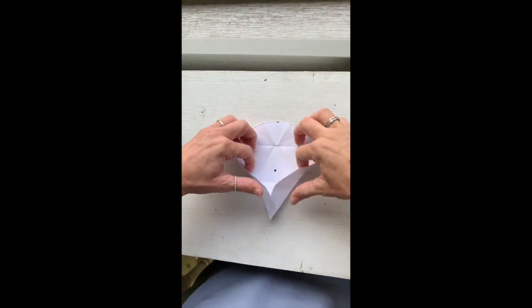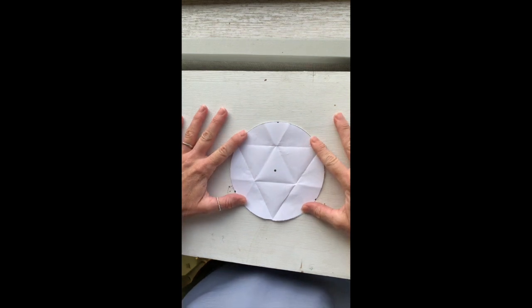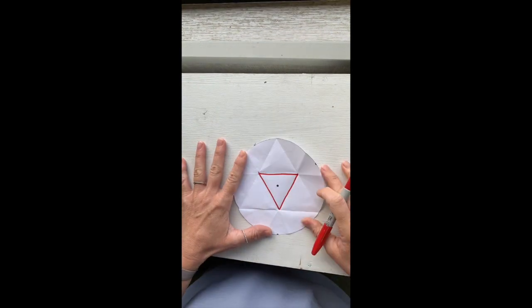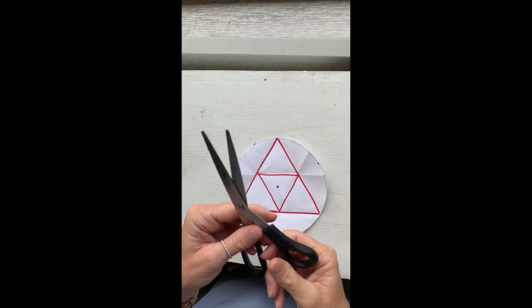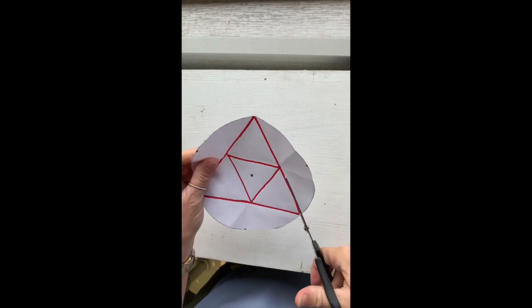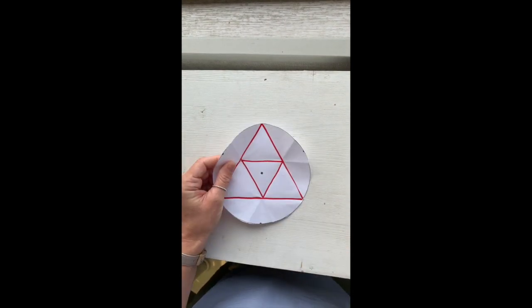Now just so we can see everything a little better, I'm going to take a dark marker and I'm going to trace all the creases I want you to take note of, and then I'm going to cut it out. Okay, now you cut yours out just like me.